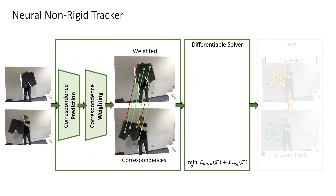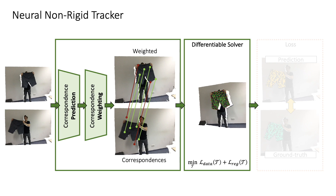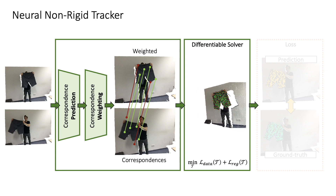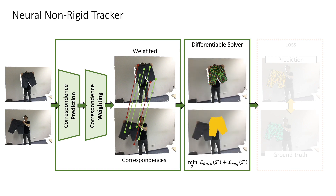We then use these correspondences as the data term in an as-rigid-as-possible non-rigid optimization. As in state-of-the-art non-rigid reconstruction approaches, we employ a deformation graph defined over the source frame. We sample graph nodes uniformly over the source foreground object and define node connectivity using geodesic distances. For each node, we estimate global translation and local rotation, which defines source to target motion. Dense deformation is then computed by interpolating node motion.